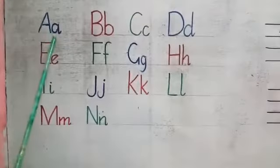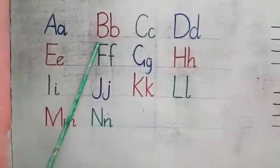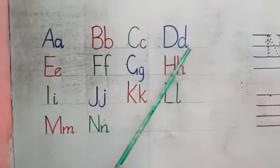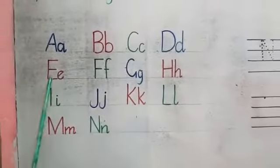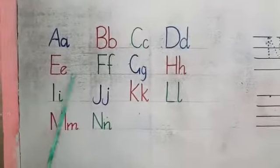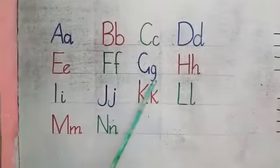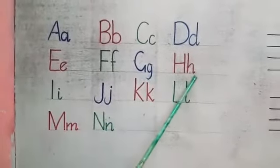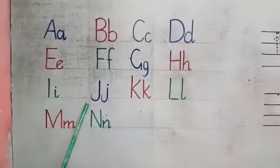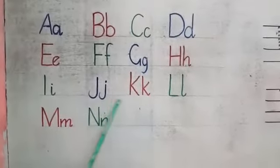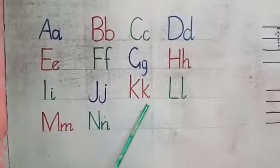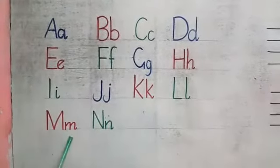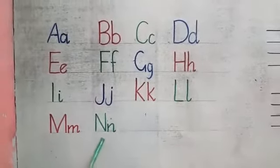Now look here. A, A, A, B, B, B, C, K, D, D, D, E, A, F, G, G, G, H, H, I, E, J, J, K, K, L, L, M, N, N.